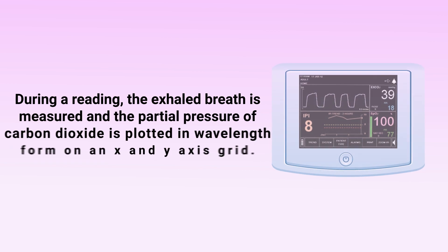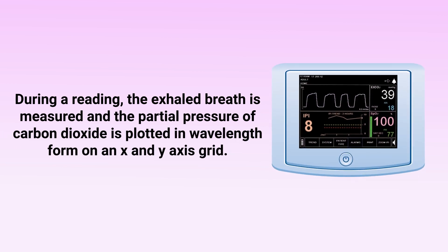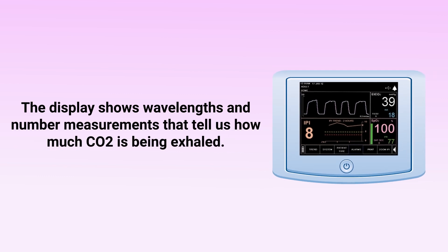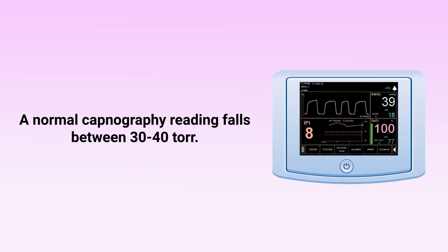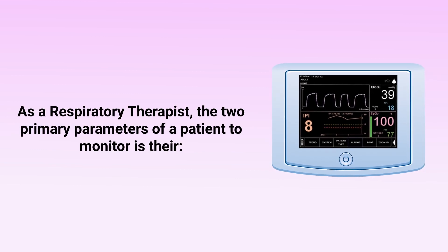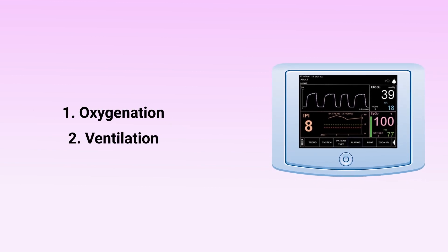During a reading, the exhaled breath is measured and the partial pressure of carbon dioxide is plotted in waveform on an x and y axis grid. The display shows the waveform and number measurements that tell us how much CO2 is being exhaled. To know the normal value range, a normal capnography reading falls between 30 to 40 torr. As a respiratory therapist, the two primary parameters to monitor are oxygenation and ventilation.